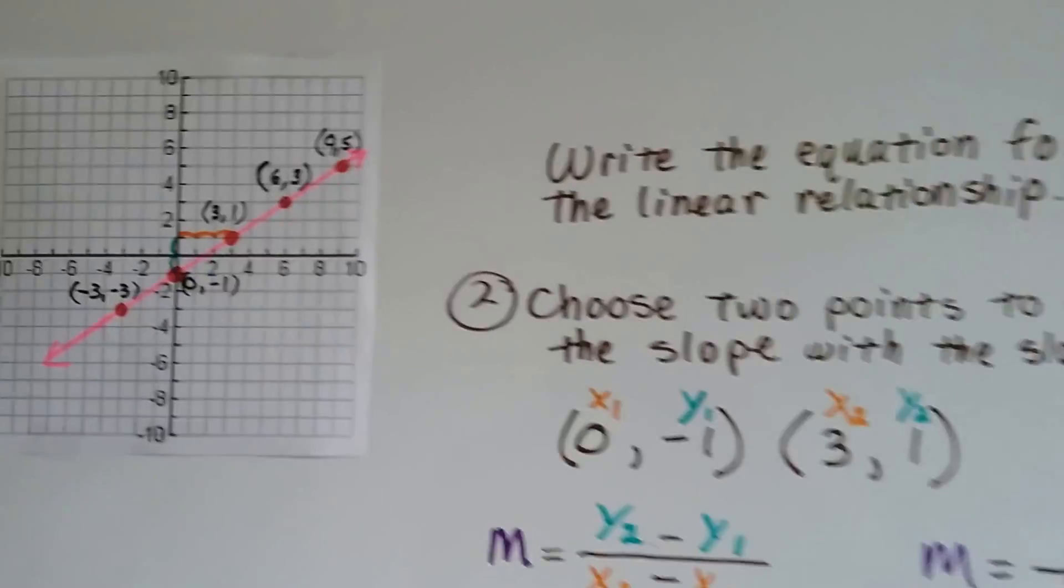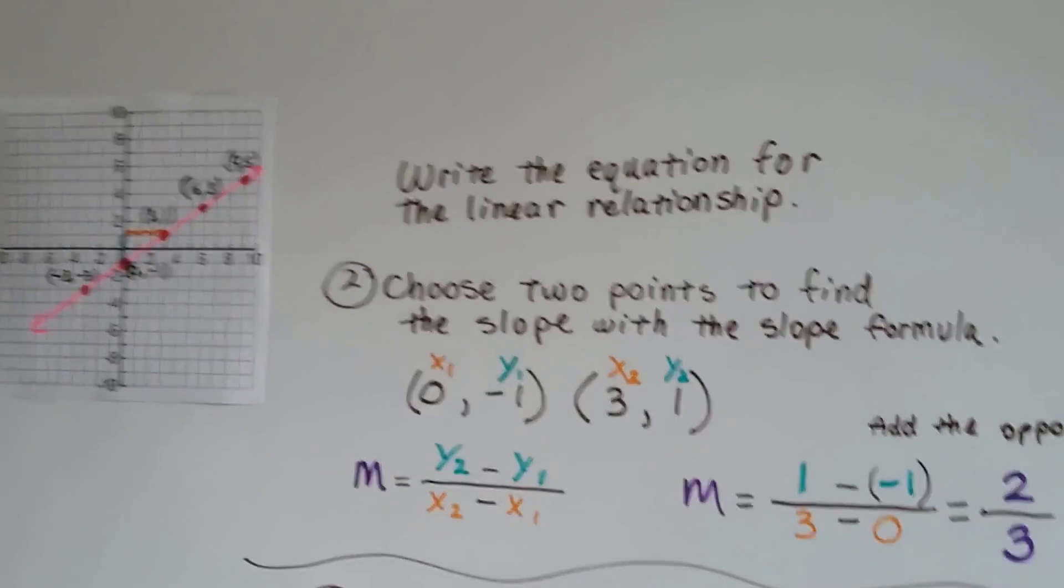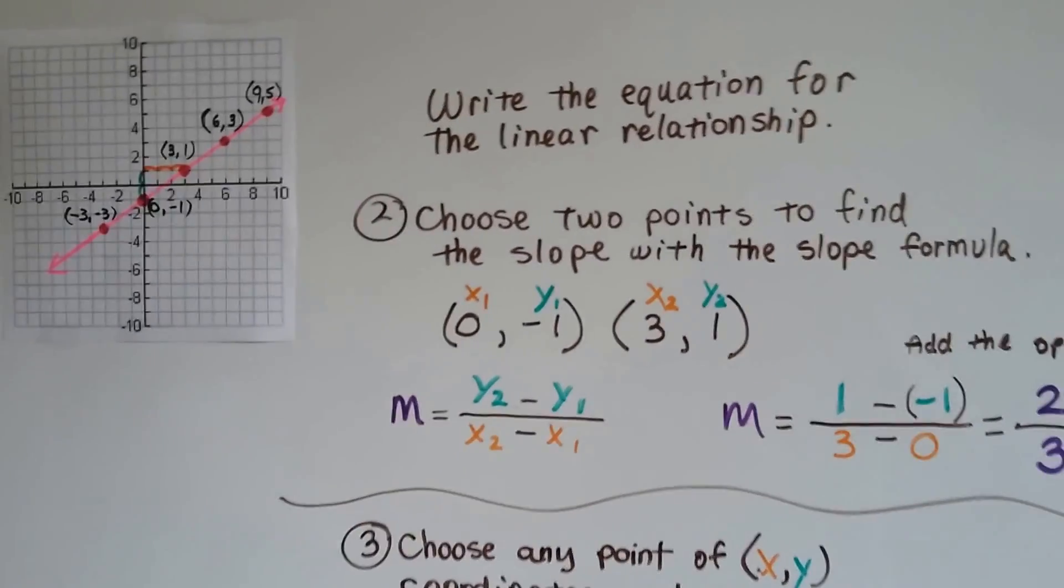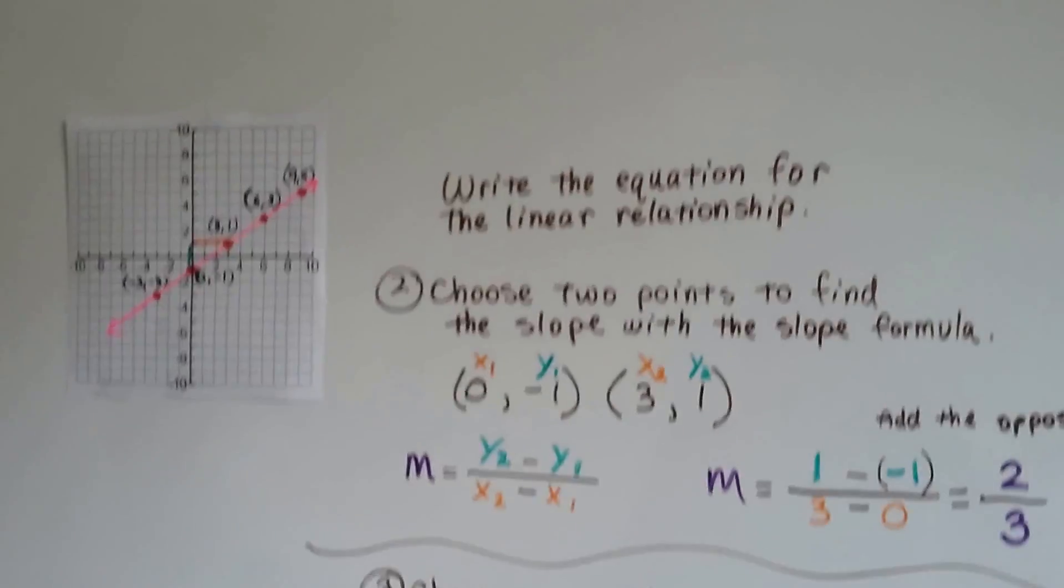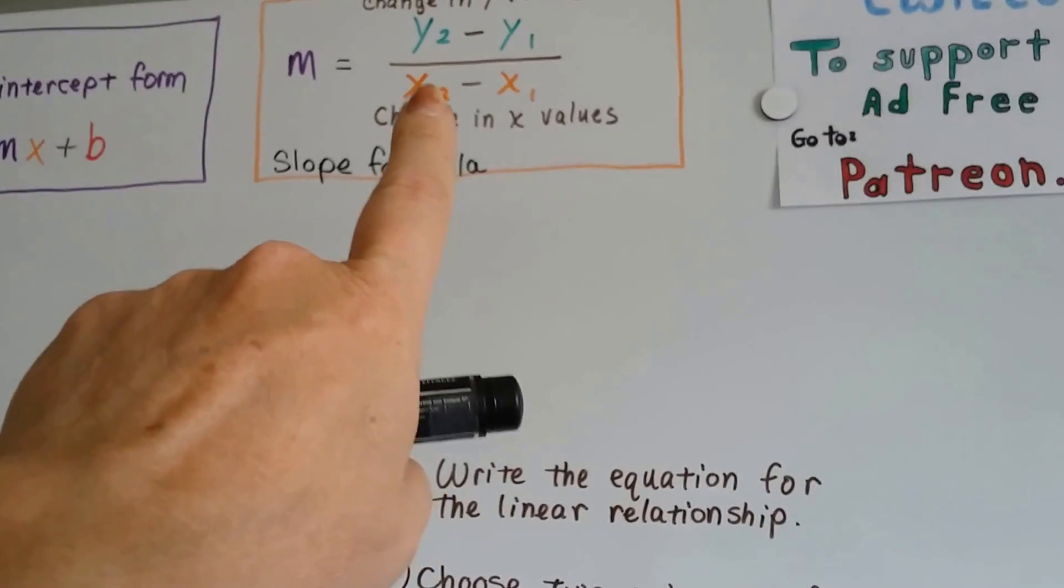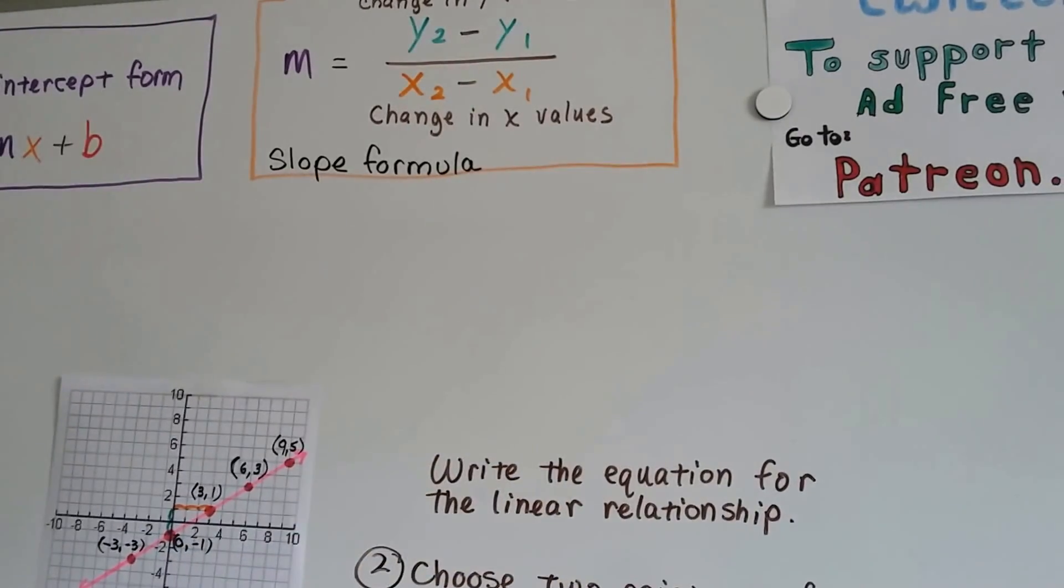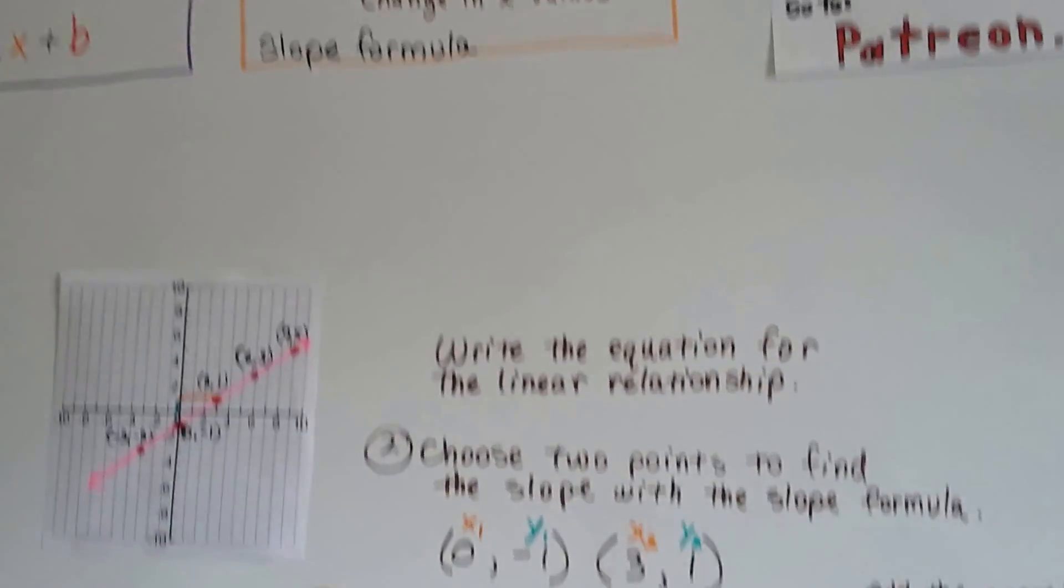So now we need to write the equation for the linear relationship. We've done something like this before in the previous videos. We choose two points to find the slope with the slope formula. It's the change in y values over the change in x values written as a ratio, like a fraction.